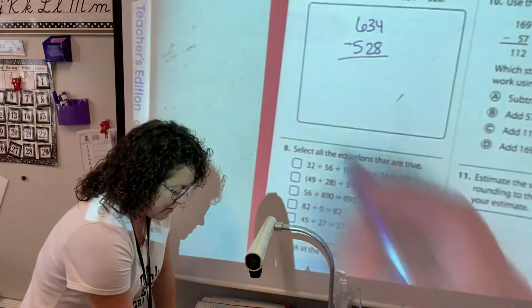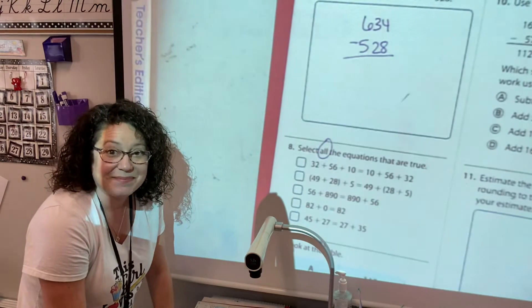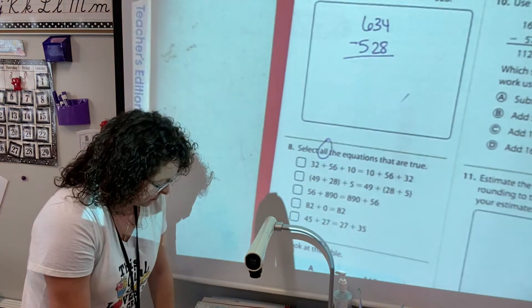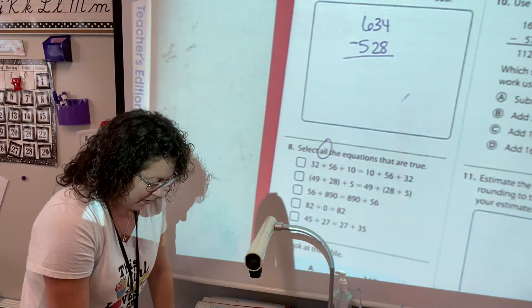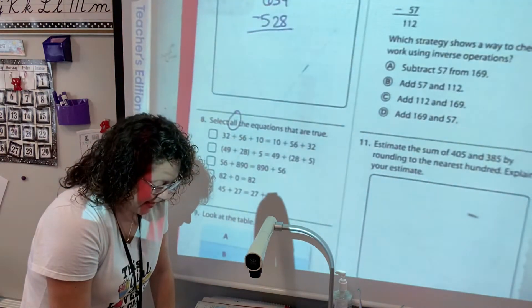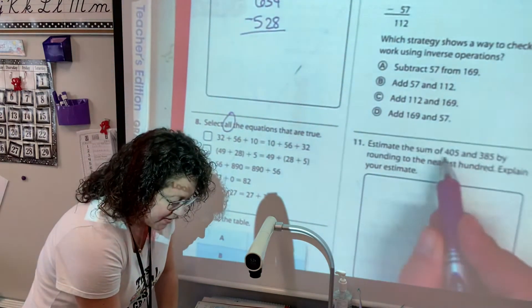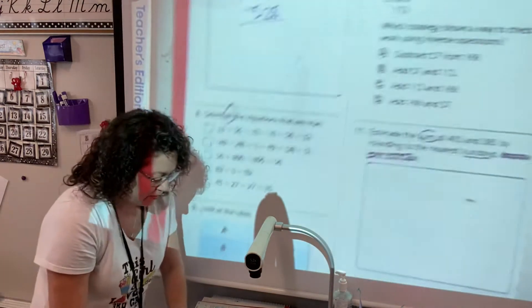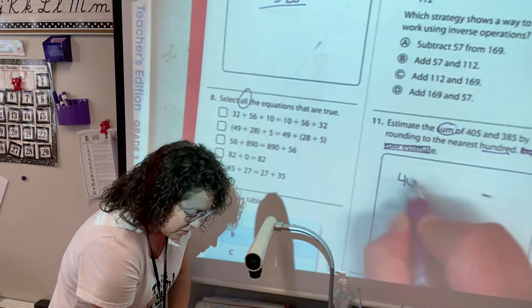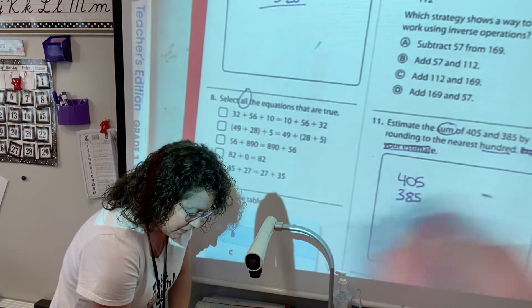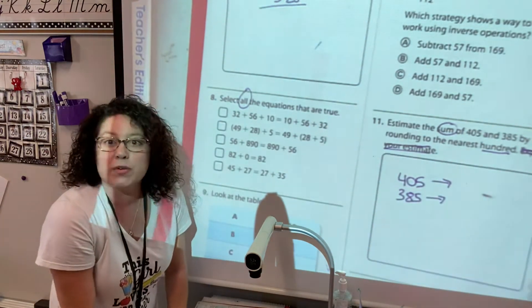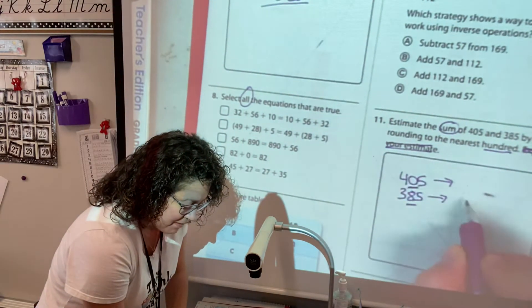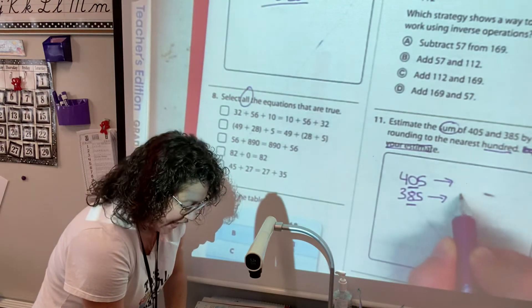Number eight, you should see a special word there, select all that apply. Remember what that means? There's going to be more than one box checked. Okay, number 11 says estimate the sum rounding to the nearest hundred, explain. You don't need to explain. So you're going to round to the nearest hundred, and remember when you round to the nearest hundred you look at the tens. And when it says sum, that means to add.